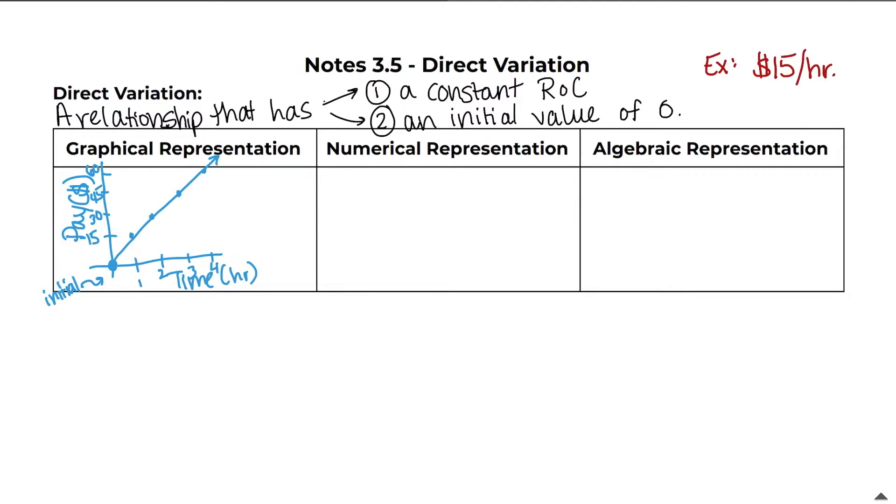And if you notice, the line is straight. It's not changing the steepness of the line. So because the line steepness is staying the same, that tells us we have a constant rate of change. And because it starts at zero, it tells us we have an initial value of zero.